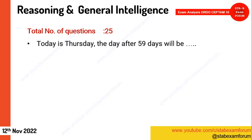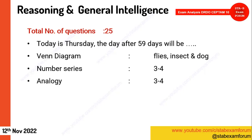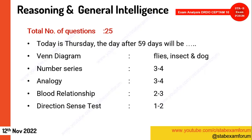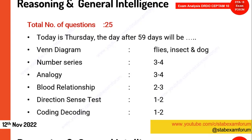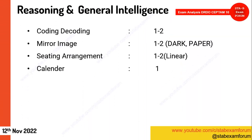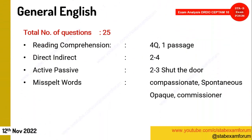In Reasoning and General Intelligence — 25 questions. First question: today is Thursday; after 59 days what will be the day? A Venn diagram on flies, insects and dogs — very simple. Three to four questions on number series, three to four on analogy and blood relationships. One to two questions on direction sense. Questions on coding-decoding, mirror image of clock and paper cutting, one to two on seating arrangement, and one on calendar.